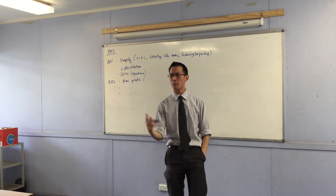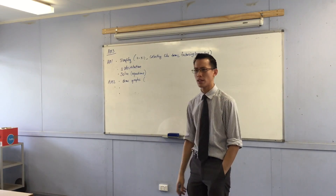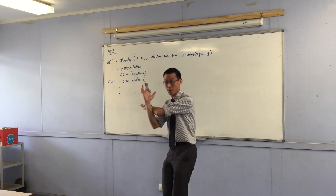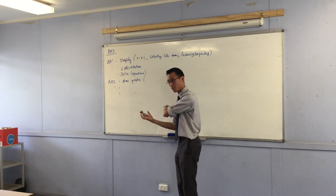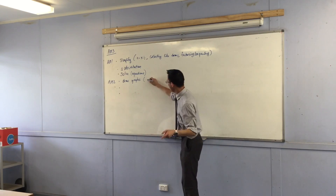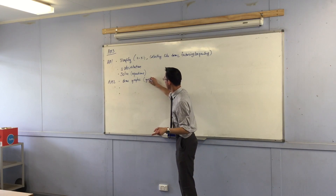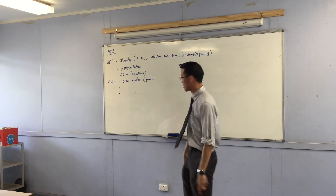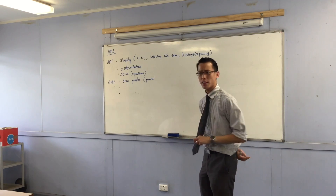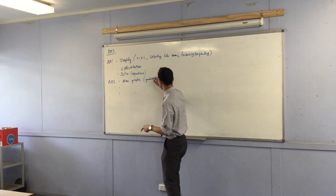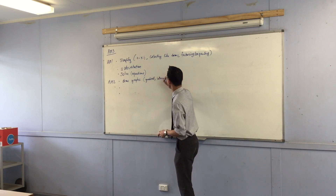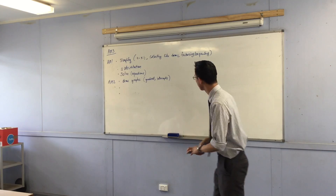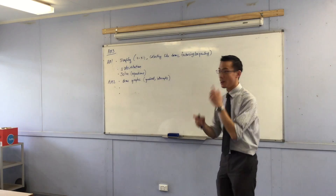There are two main important features on a graph. Apart from the actual axes, the line itself is going to have a gradient — that's how steep the line is: is it going up, is it going down, is it doing it fast or slow? There's one other thing that you needed: intercepts. The y-intercept usually was the most important one. So we drew graphs.